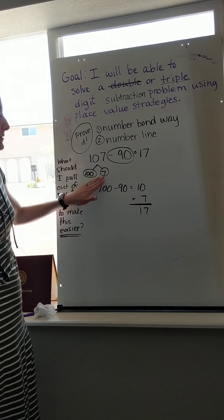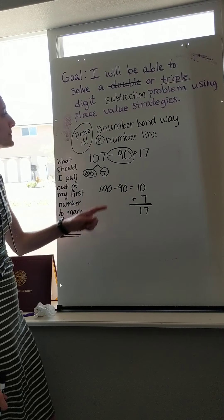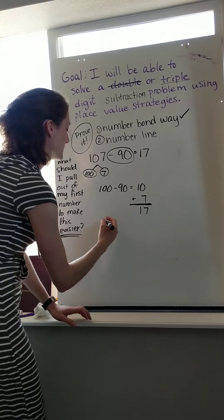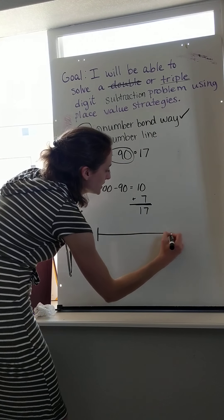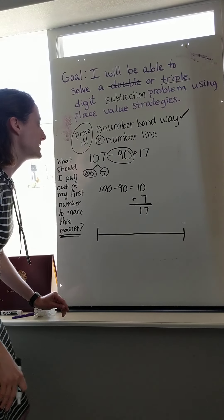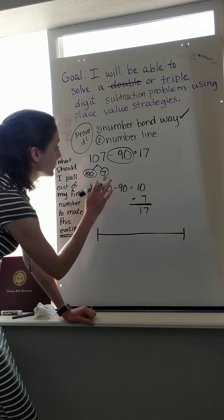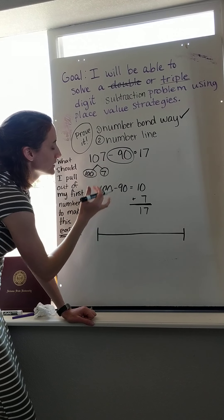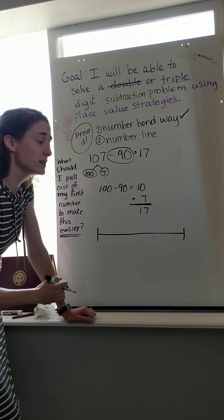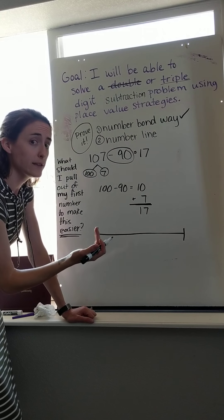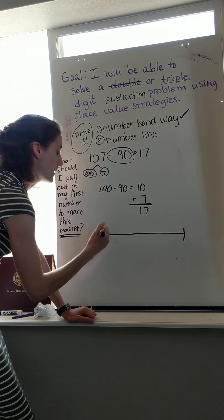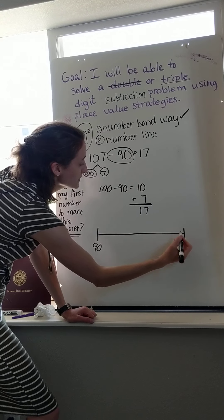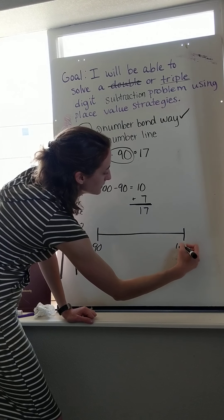So I used the number bond way to find this answer. Now I'm going to use the number line way. So with the number line way and subtraction, I like to think of it as, what's the difference between these two numbers? Because that's easier than counting backwards. I like to put the part that I know and think, what's the other part that's going to get me to 107?